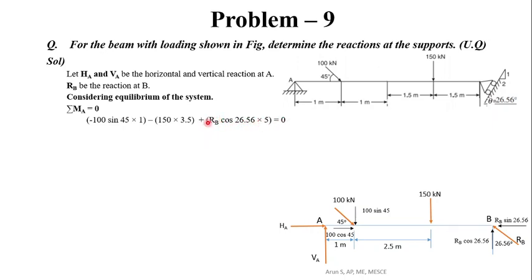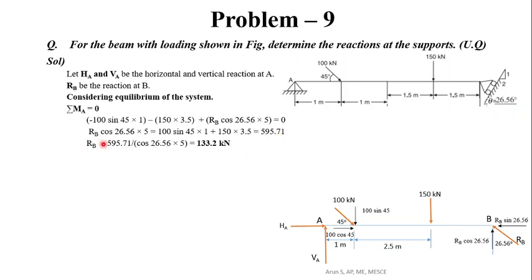The only unknown is RB. Rearranging: RB cos 26.56 × 5 = 100 sin 45 × 1 + 150 × 3.5 = 595.712. Therefore, RB = 595.712 / (cos 26.56 × 5), giving RB = 133.2 kN.